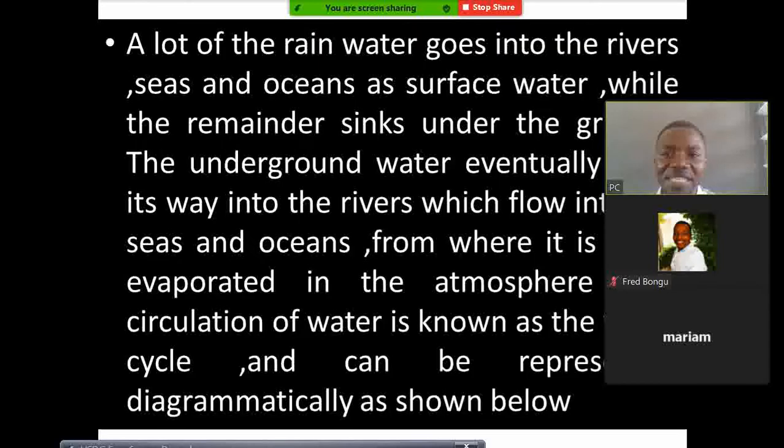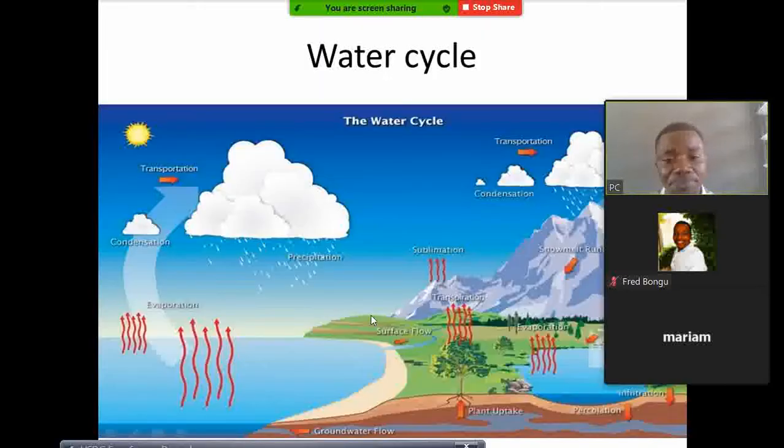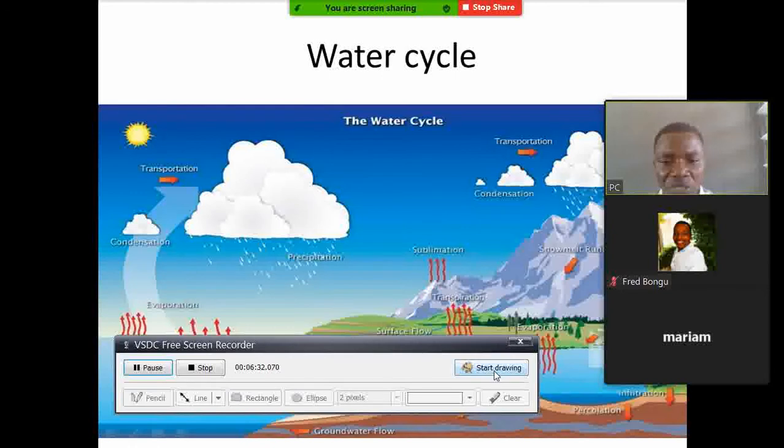Now, in this water cycle, a lot of rain goes into the rivers, goes into the sea, the lake. And while the remainder of the water that does not go into the ocean, it sinks to the ground. And after sinking, it finds its way into the rivers. From the river, it flows into the ocean again. From where it is evaporated. And this circulation is what we call as a water cycle. I will show this one in a diagram. Whereby, I want to demonstrate that one. That here rain, we have rain that is going to come.